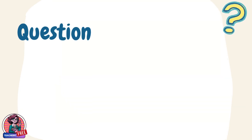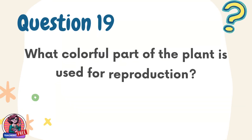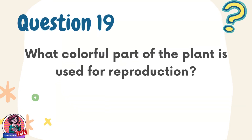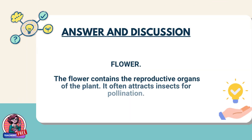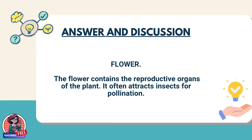Question 19. What colorful part of the plant is used for reproduction? Answer: Flower. The flower contains the reproductive organs of the plant. It often attracts insects for pollination.